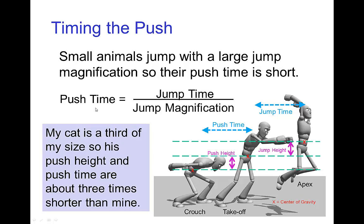As I was saying, my cat is about a third my size, so the distance that he pushes, the push height, is three times less than mine. And similarly, the time that he pushes off is about three times shorter than mine. So if I jump and push off the ground for three frames, he would probably push off the ground for only one frame.